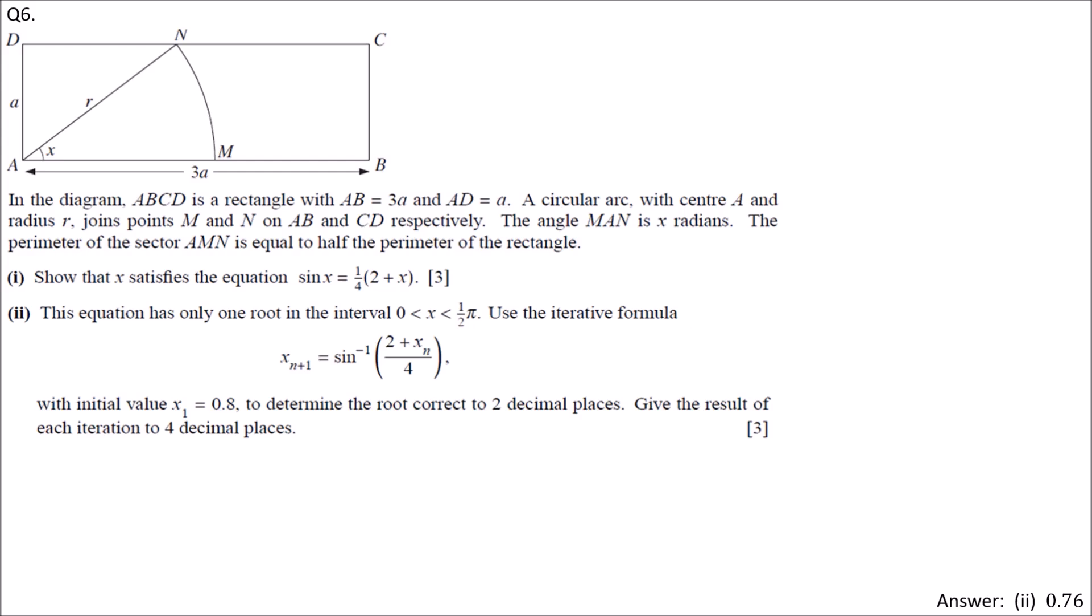The second part. This equation has only one root in the interval 0 < X < pi/2. Use the iterative formula with initial value X_1 equals 0.8 to determine the root to 2dp, each iteration to 4dp. The first value X_1 is 0.8.